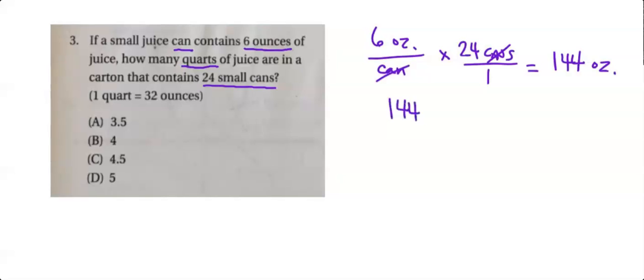So to convert to quarts, we're going to multiply by one quart per 32 ounces. So that now the ounces will cancel and it's going to be 144 divided by 32, which is 4.5. You can verify that.